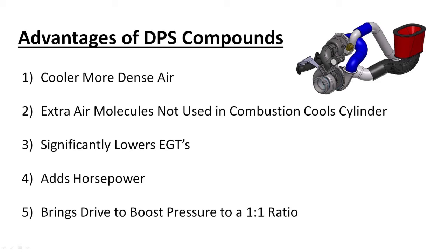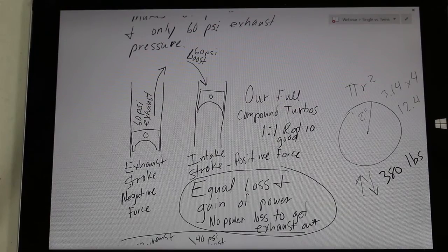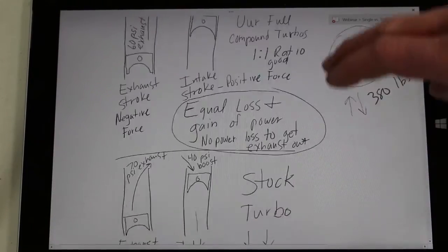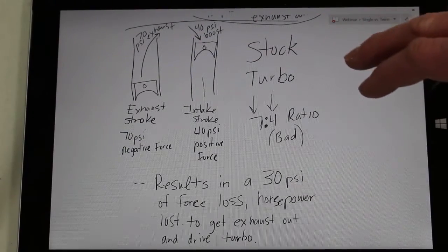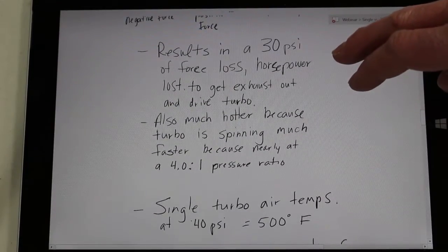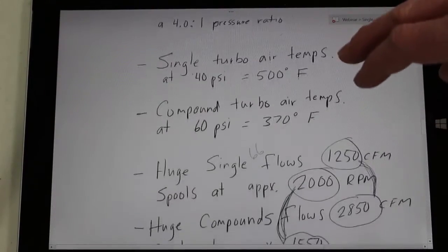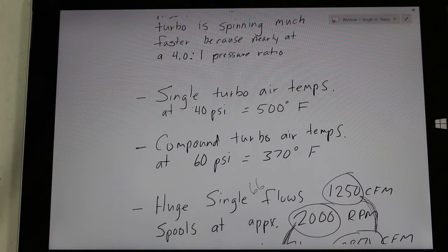So to quickly add one more huge benefit of the compound turbos over a single, I'm going to show you what the air temperatures and exhaust temperatures. So a single turbo at 40 PSI will build approximately 500 degrees of temperature on the air leaving the compressor before it gets to the intercooler. That means air exiting the compressor before it hits the intercooler is about 500 degrees on a single turbo at 40 PSI.